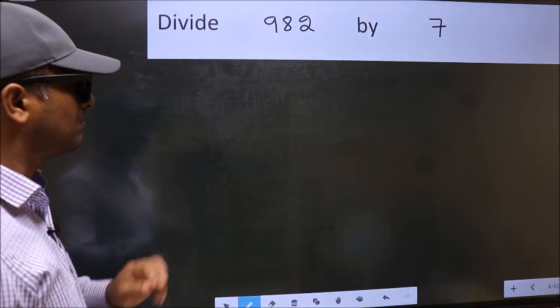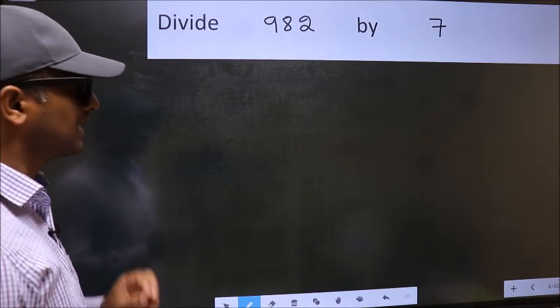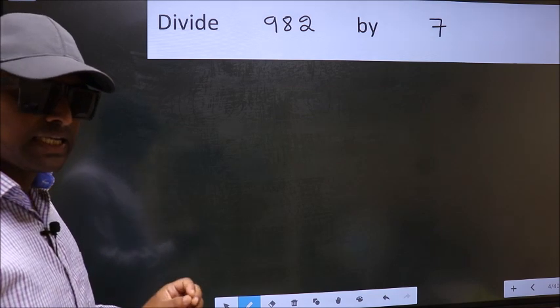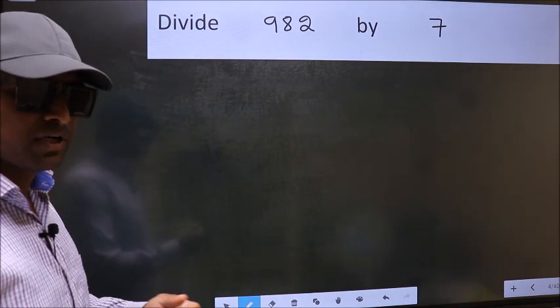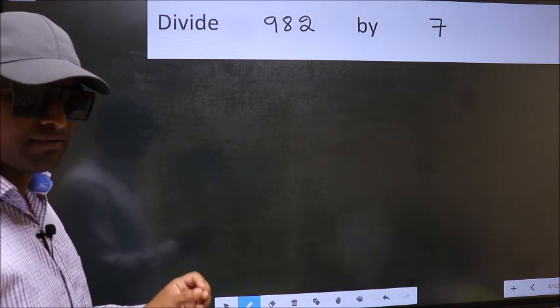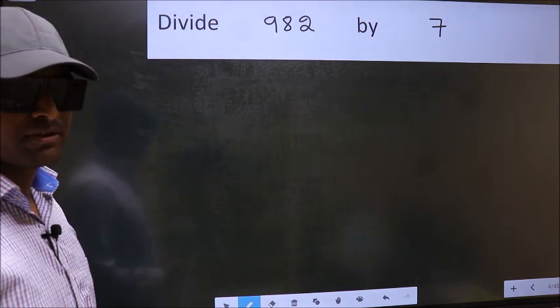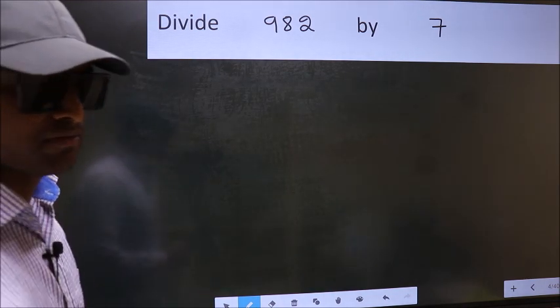Divide 982 by 7. While doing this division, many do this mistake. What is the mistake that they do? I will let you know. But before that, we should frame it in this way.